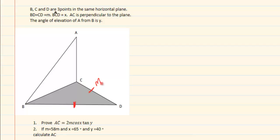They tell us that BD is equal to CD, and they label it M. Angle BCD is equal to X. AC is perpendicular to the plane — that means it is 90 degrees. Think of the gray as your carpet and the white as your wall: the wall goes vertical and the carpet lies flat on the ground horizontal. That is what they mean by two planes. The angle of elevation of A from B equals Y. Prove that AC equals 2M cos X tan Y.